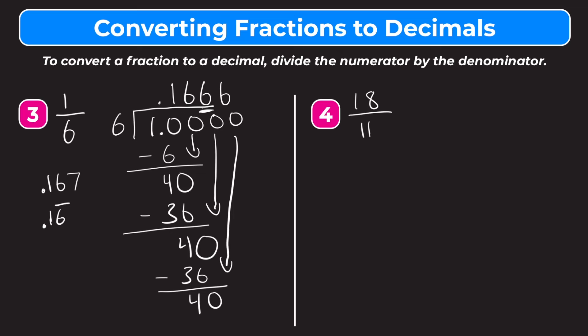Let's try number four. We have 18 over 11. Now 18 over 11 is an improper fraction, so our answer is going to be greater than one. This is one where I would just plug it into a calculator. 18 divided by 11 gives us 1.636363, and that keeps going on forever. So again we have a repeating decimal. Unlike number three, this decimal has two digits that repeat.